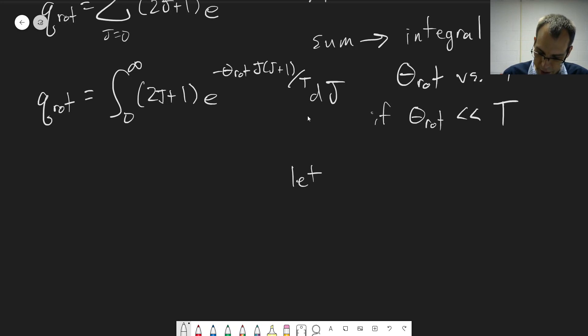And let's let x equal j times j plus 1, then dx is equal to 2j plus 1 times dj. And this just comes from taking the differential of j times j plus 1, right? That's j squared plus j, so you get 2j plus 1.